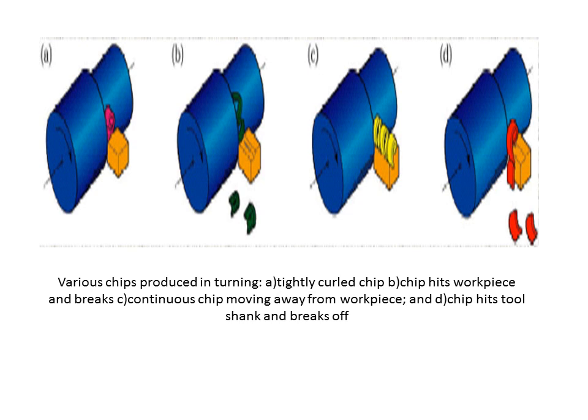The chip breaker causes the chip to hit the work piece and break. In the third configuration, the chip moves away from the work piece and curls, forming a spring type shape. Thank you all.